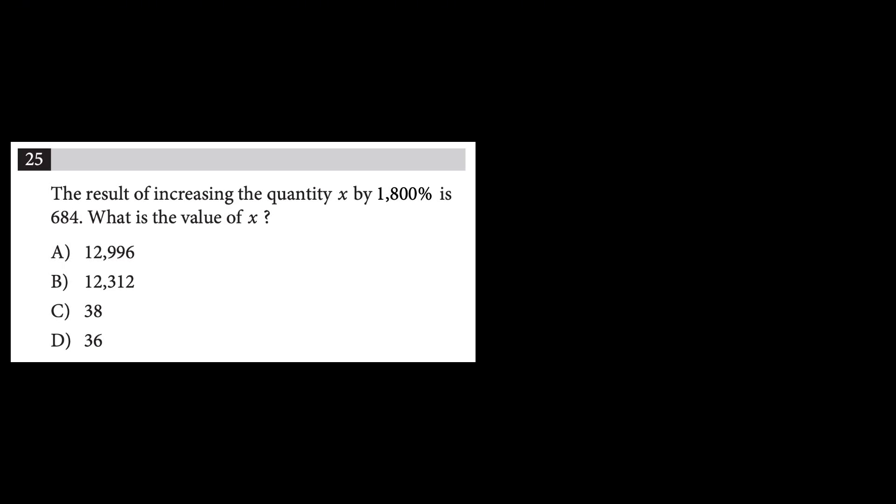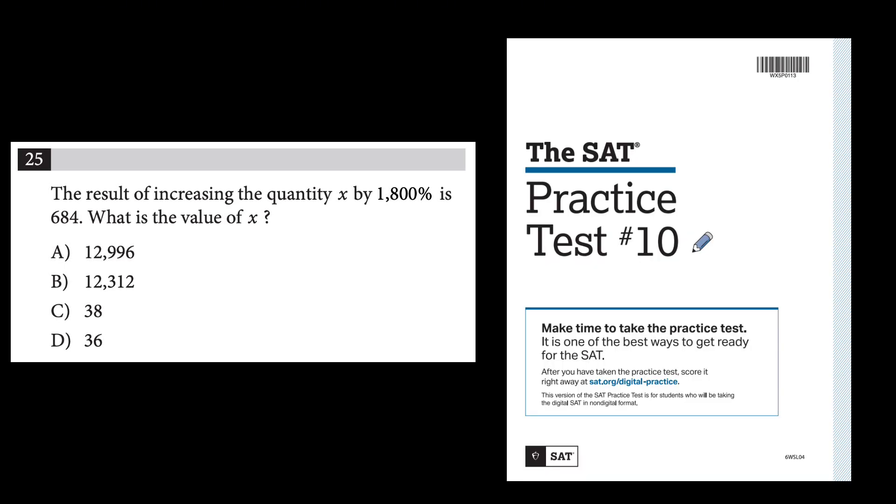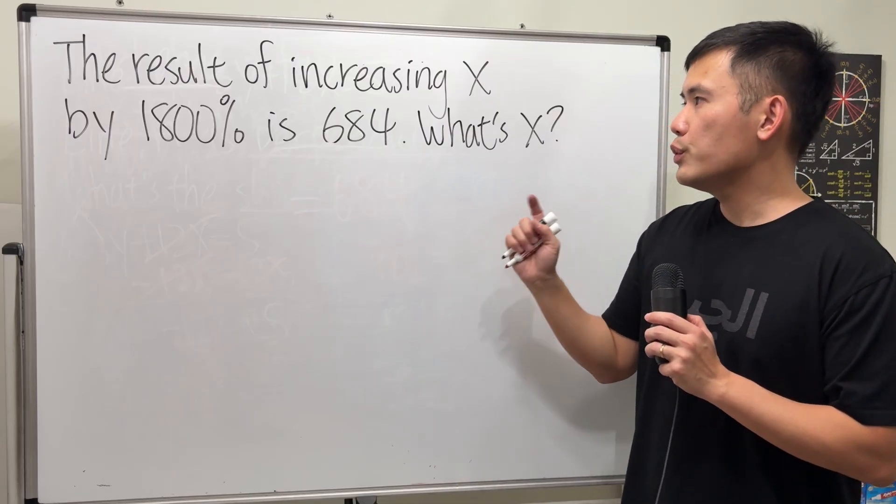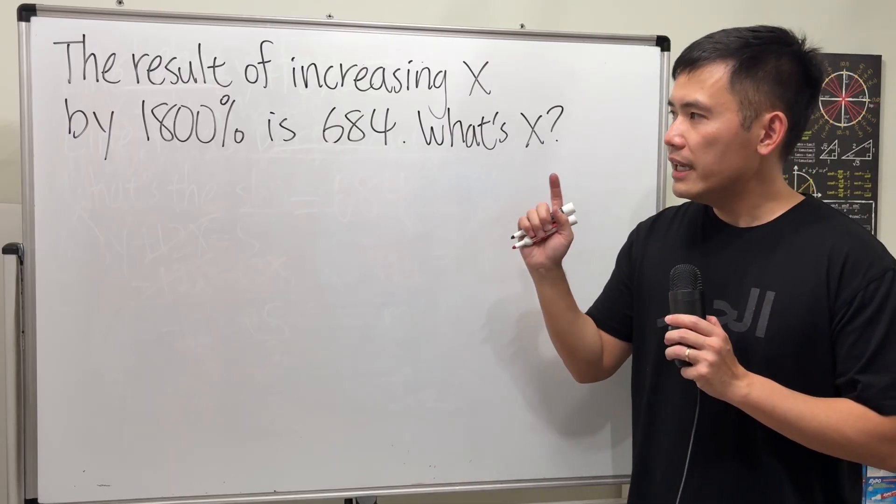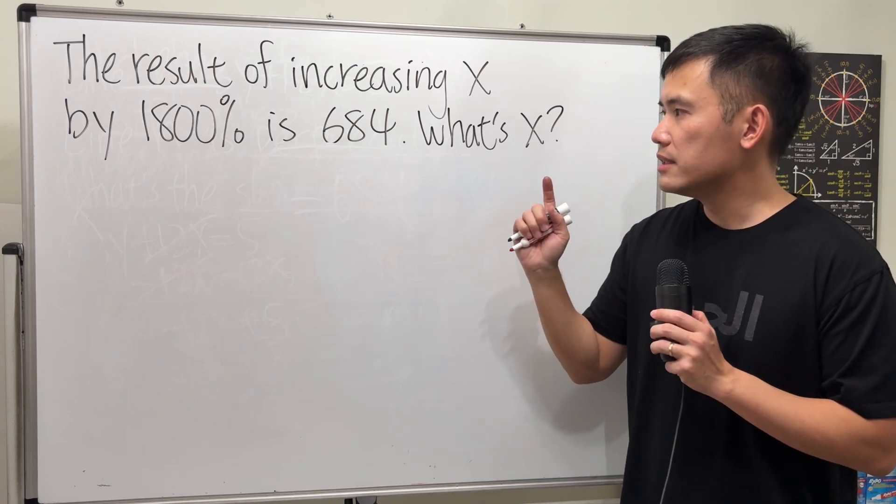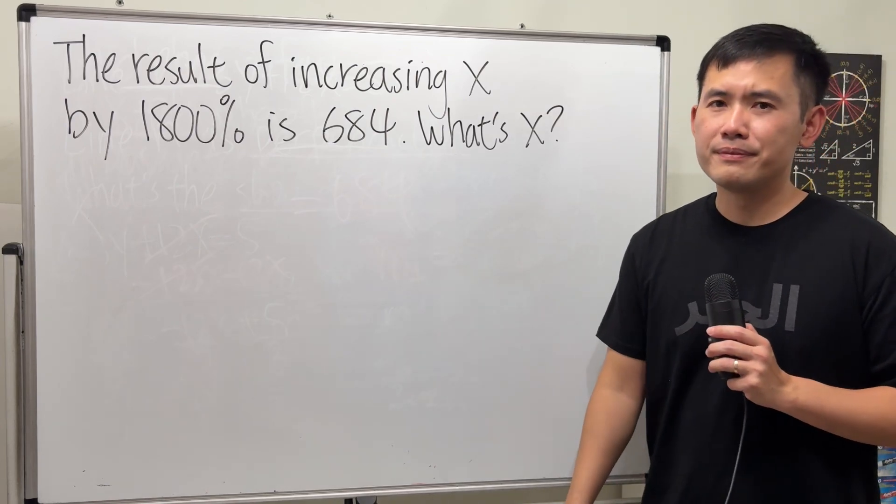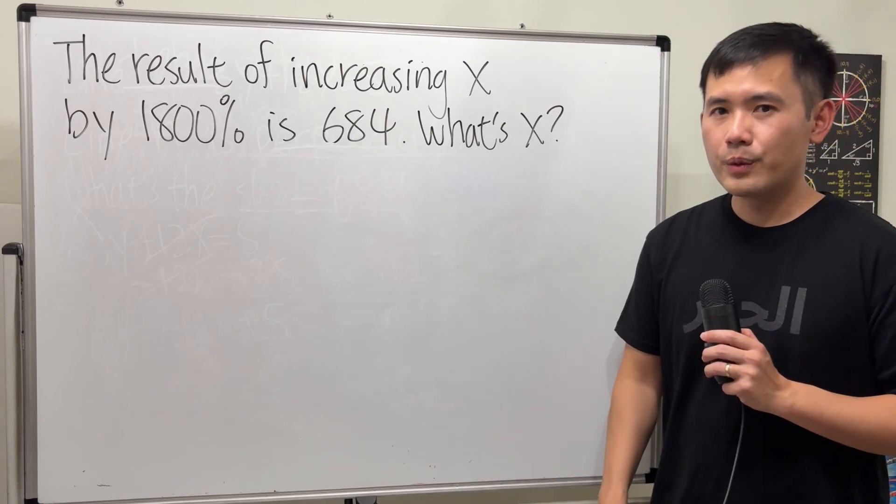Here is a percentage question from the official SAT practice test by the College Board. It says, the result of increasing the quantity x by 1800% is 684. The question is asking for the value of x. Where do we even start? Well, here's the deal. What does x represent?